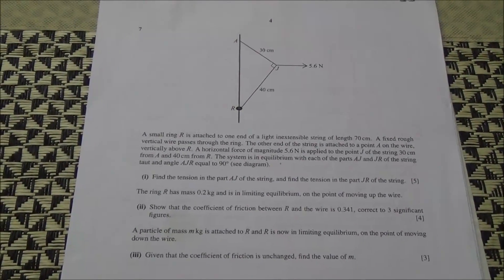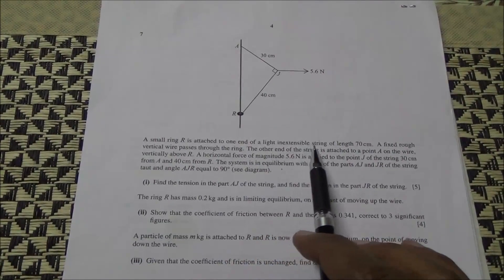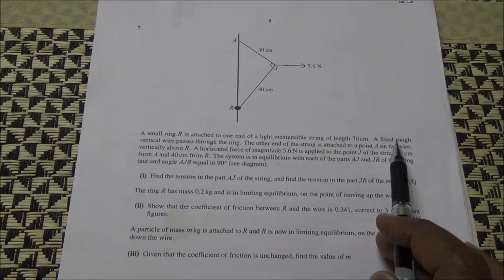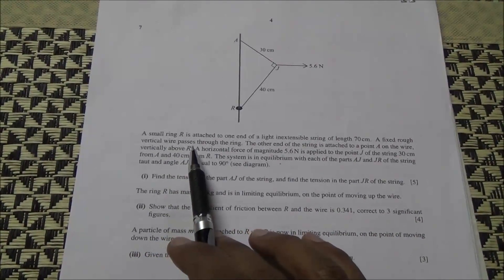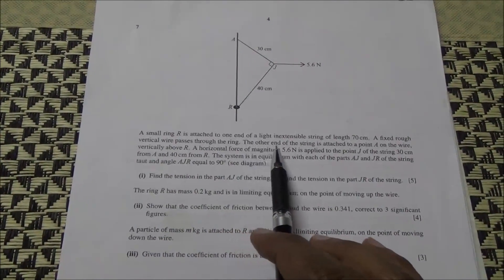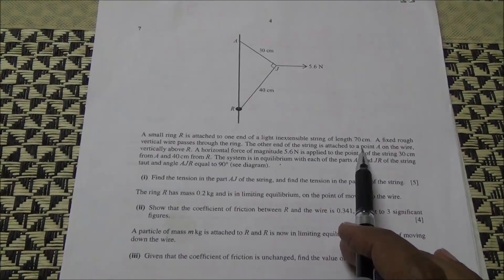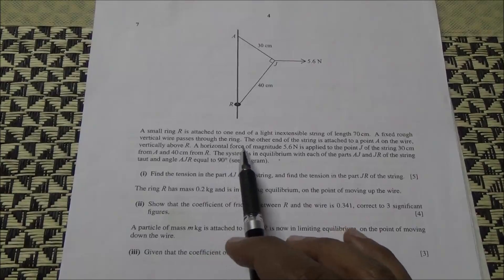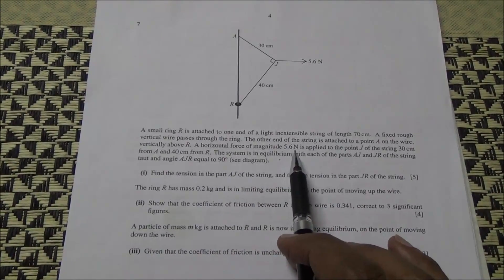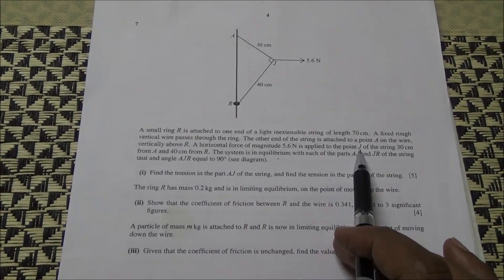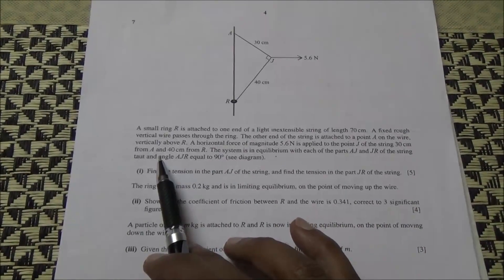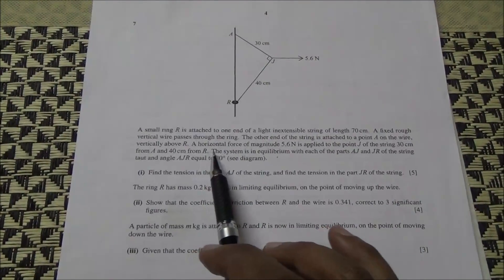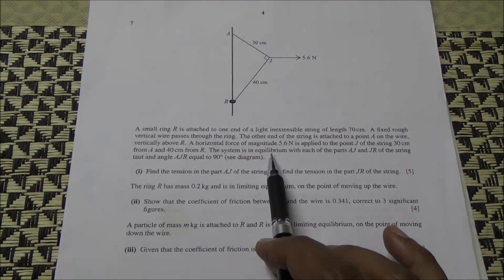A small ring R is attached to one end of a light inextensible string of length 70 cm. A fixed vertical wire passes through the ring. The other end of the string is attached to a point A on the wire, vertically above R. A horizontal force of magnitude 5.6 N is applied to the point J of the string 30 cm from A and 40 cm from R. The system is in equilibrium.